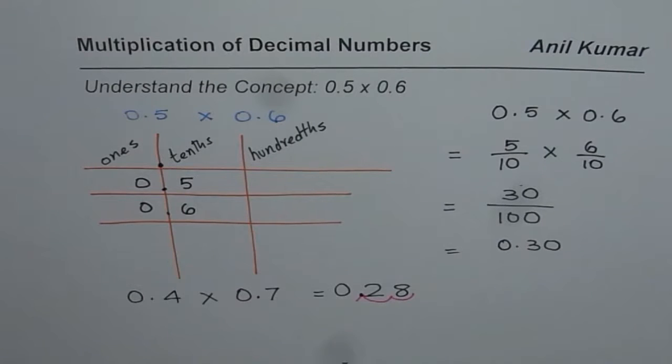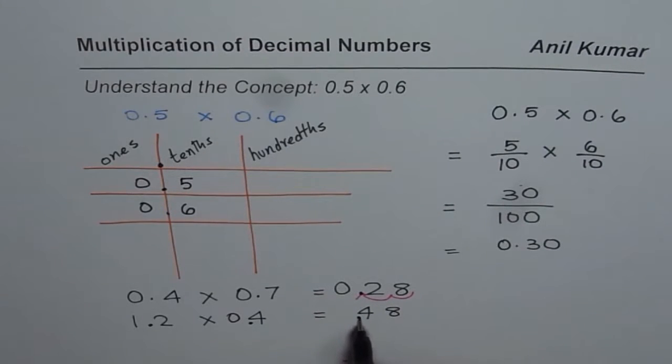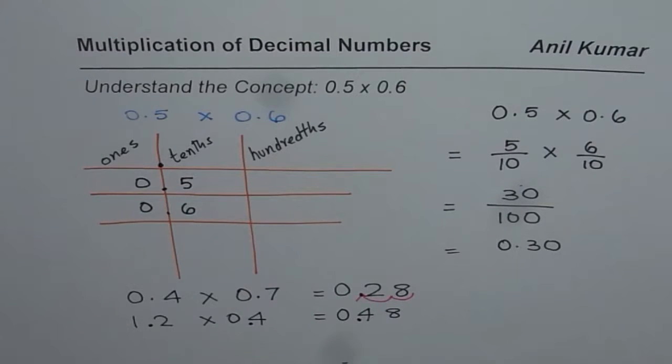So the concept here is take up the numbers. Now let us say we have a number 12 times 4. So when you multiply 12 by 4, 4 times 2 is 8 and 4 times 1 is 4. You get 48. 12 times 4 is 48. But what will be 1.2 times 0.4? Now we have two numbers after decimal. So we will place decimal so that we have two numbers after decimal in our answer also. So we get 0.48 which is good to write as 0.48. So I hope you understand the concept here.